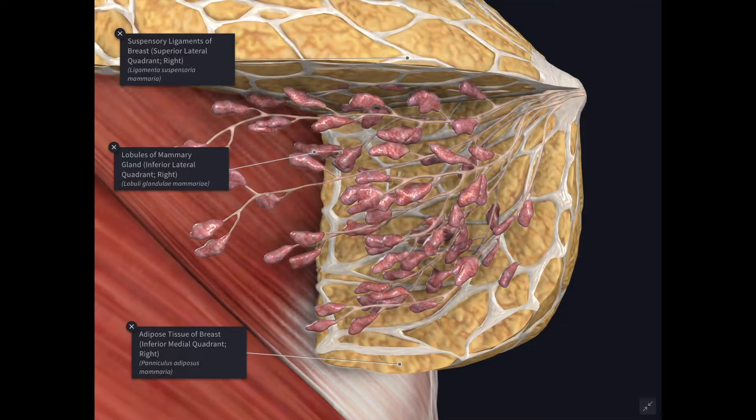In this video, we will study about the structure of the mammary gland. The structure of the mammary gland consists of three components. One is the glandular tissue, which is of tubular alveolar type and they are arranged in lobes.